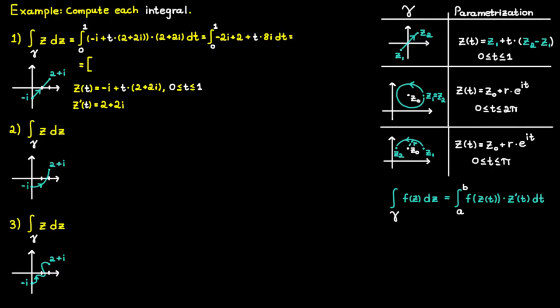From here it is standard procedure. Since we are integrating with respect to t, we find the antiderivative of the integrand. Evaluating at the upper and lower limits gives us a result that simplifies to 2i plus 2, which is our final answer.